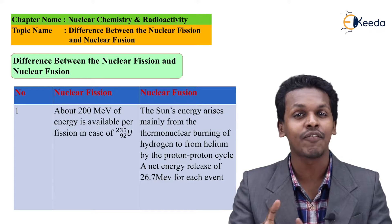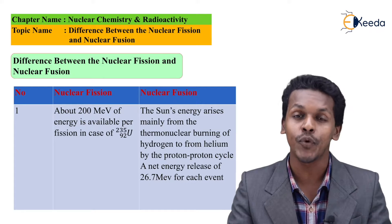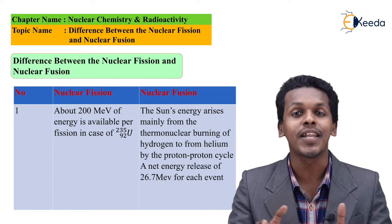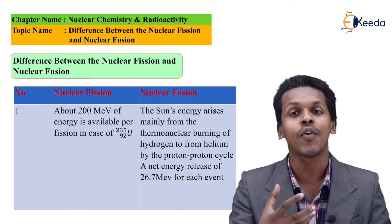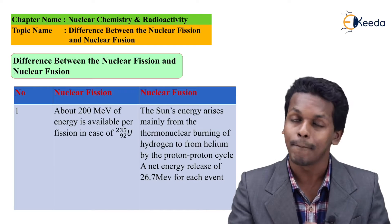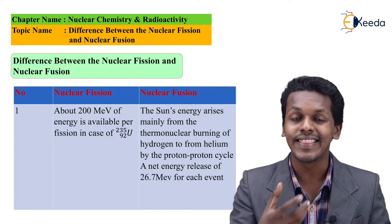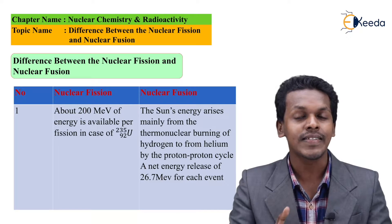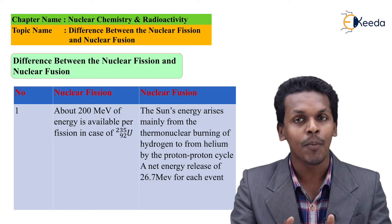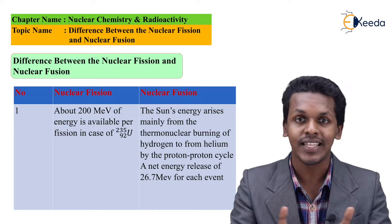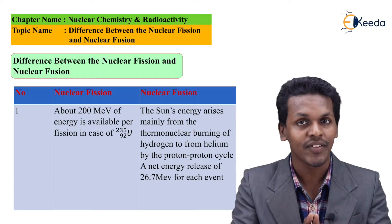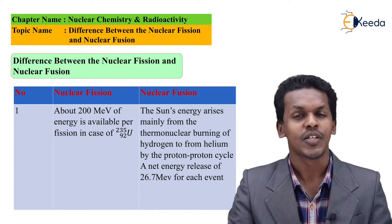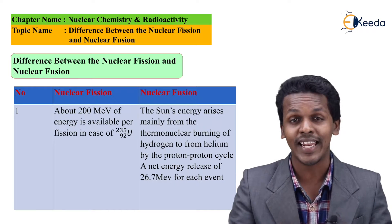Now let me talk about the definition of nuclear fusion. Nuclear fusion is nothing but a combination of two lighter particles so as to form a heavier particle. This also produces energy. So this heavy nucleus that has been formed because of the two lighter nuclei when they get combined with each other, it also produces energy.